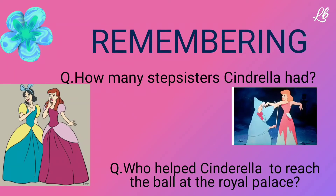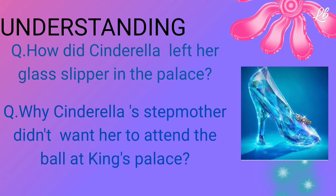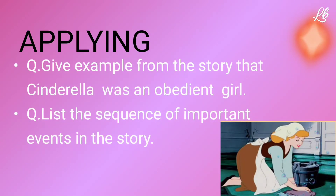Who helped Cinderella to reach the ball at the royal palace? Use this level to ensure that the student has learned specific information from the chapter or the story. Understanding: How did Cinderella leave her glass slipper in the palace? Why did Cinderella's stepmother not want her to attend the ball at the King's palace? At this level, you want the students to understand the main ideas or concepts and explain, express, or summarize in their own words.